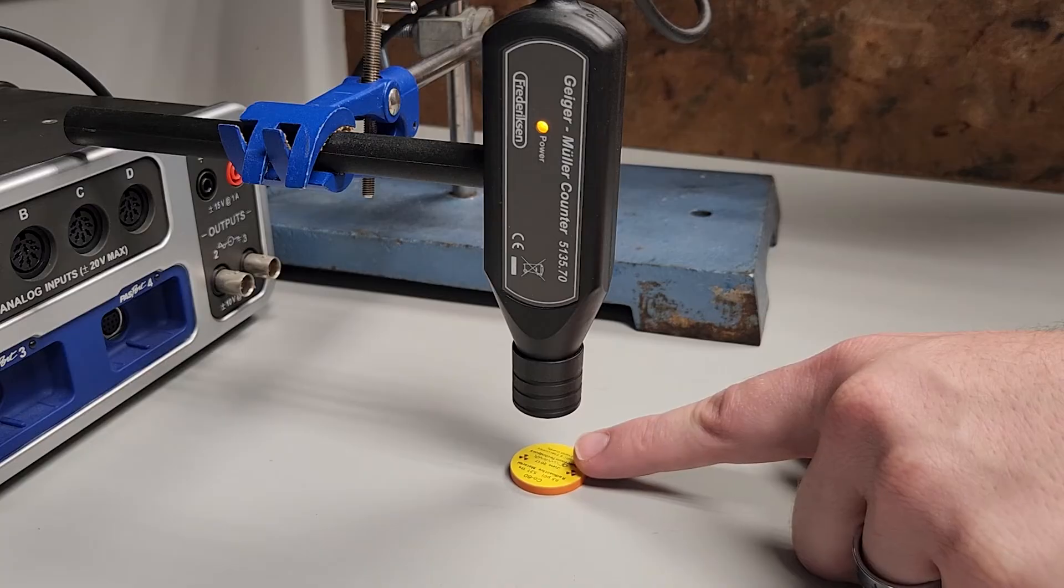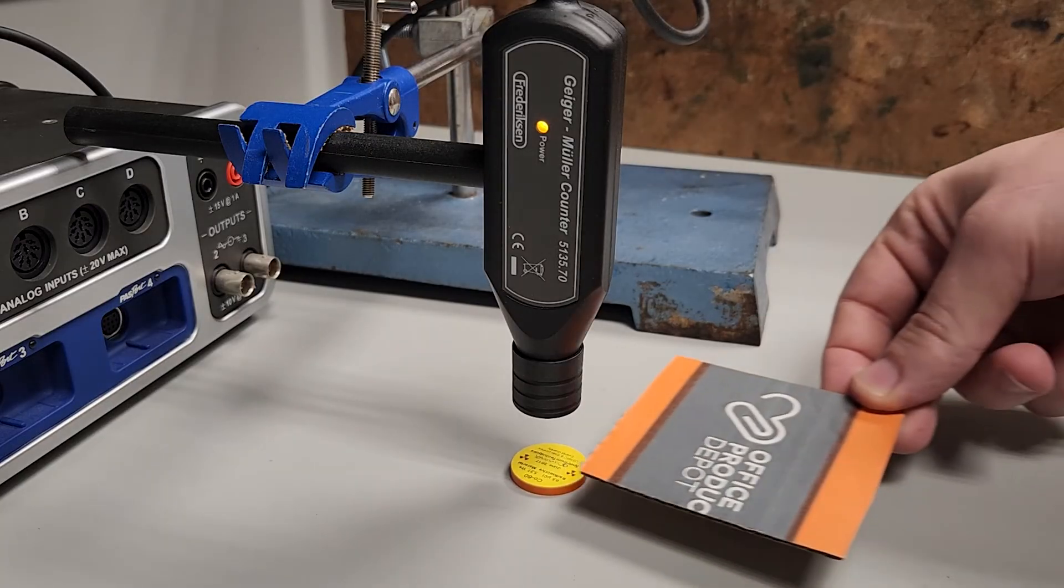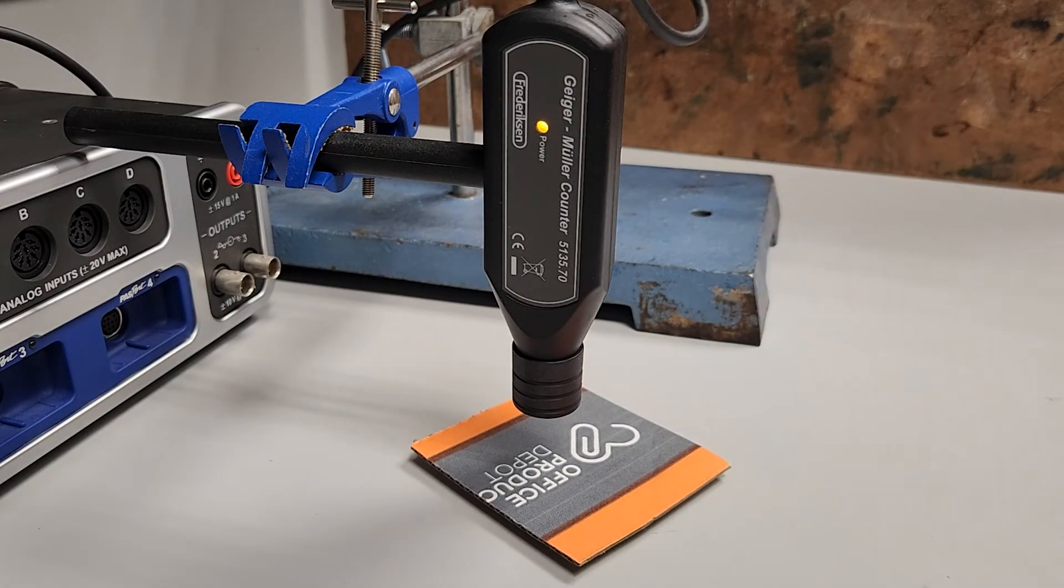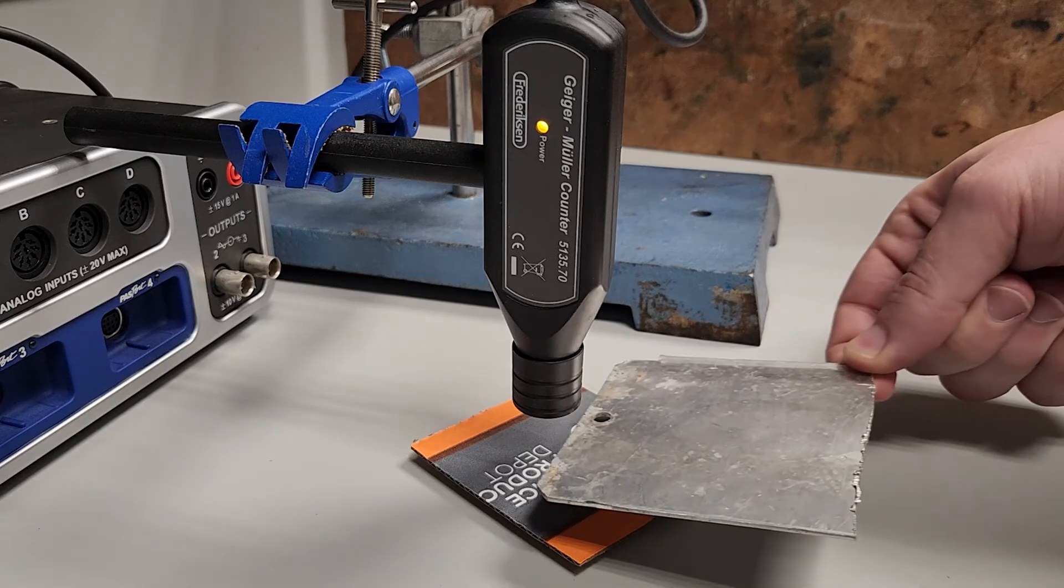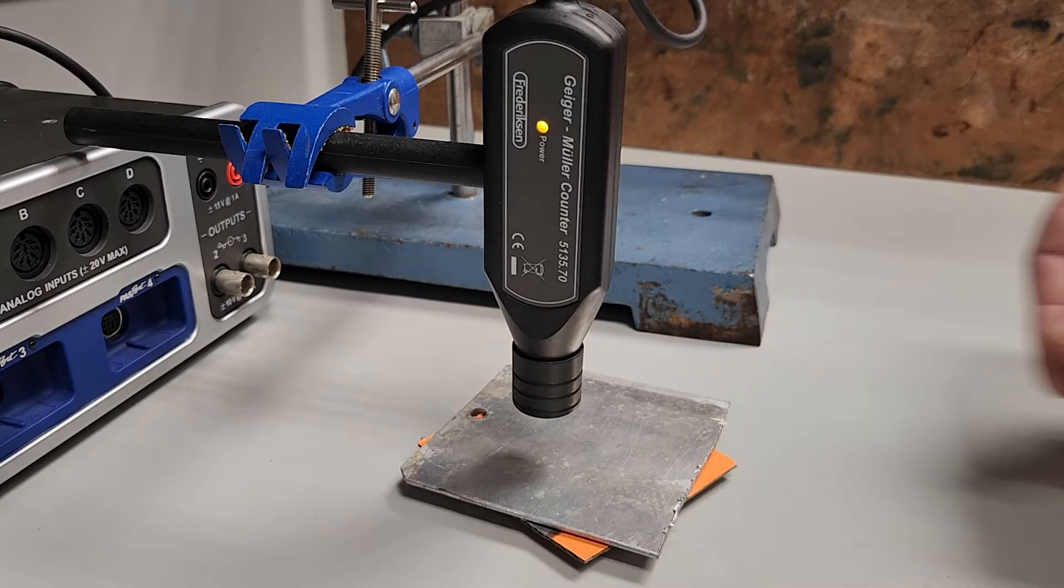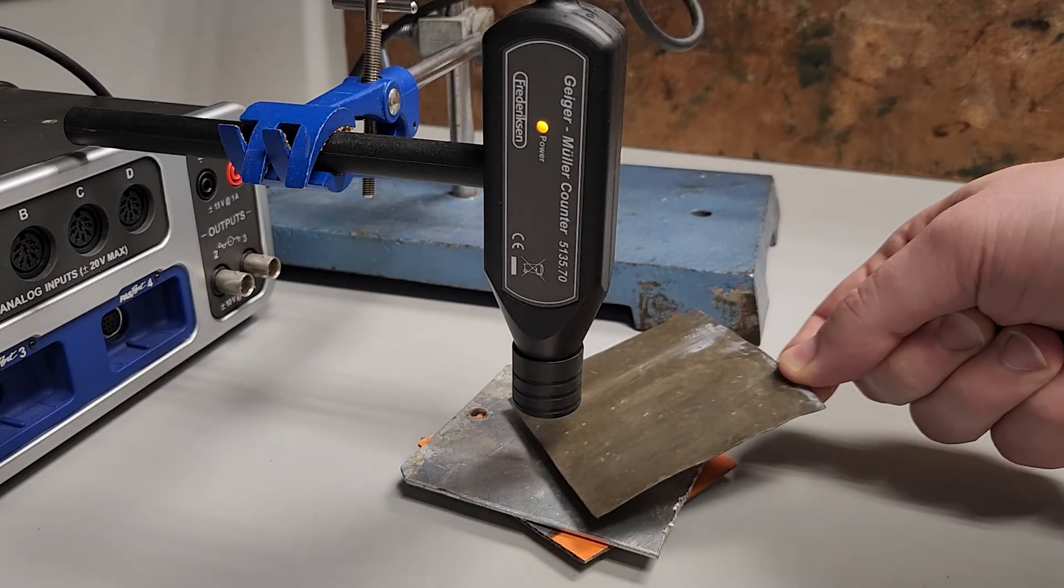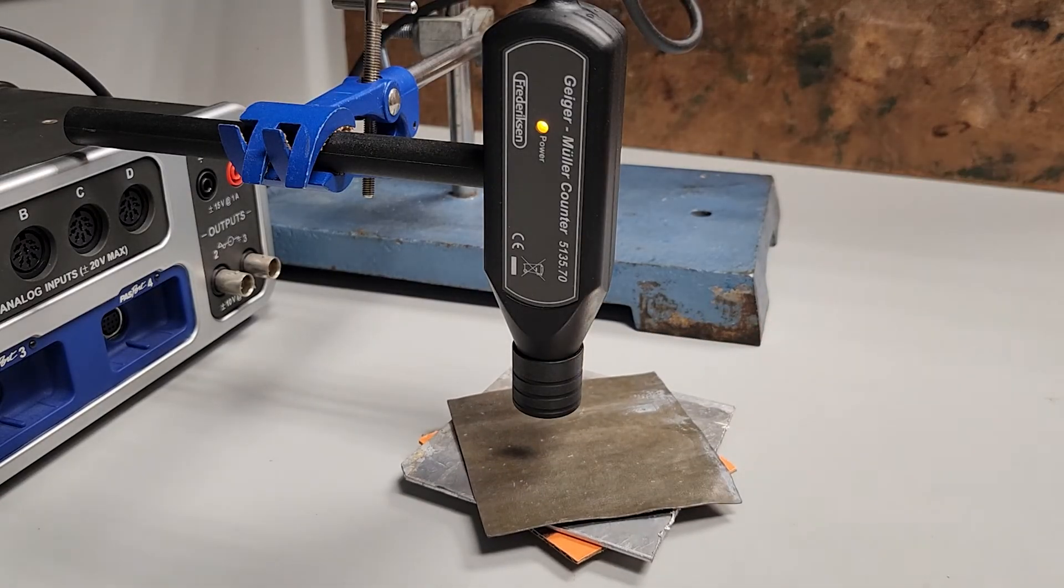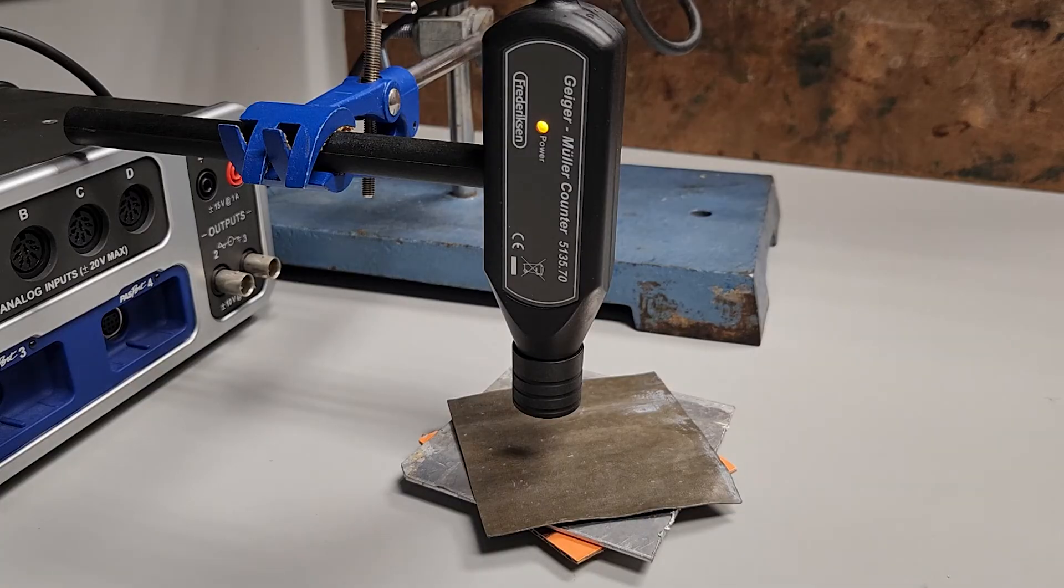Now let's test a gamma source. Our sheet of cardboard has no effect, as you might expect. Our sheet of aluminum likewise has little to no effect. Even this sheet of lead still isn't enough to stop the gamma radiation, which in some cases can penetrate lead up to several inches.